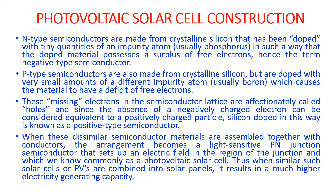N-type semiconductors are made of silicon doped with phosphorus in such a way that the material possesses free electrons, hence called negative-type semiconductor. P-type semiconductors are also made of crystalline silicon but doped with a small amount of boron, which causes the material to have a deficit of free electrons. Those missing electrons in the semiconductor lattice are called holes, since the absence of a negatively charged electron can be considered equivalent to a positive charged particle.